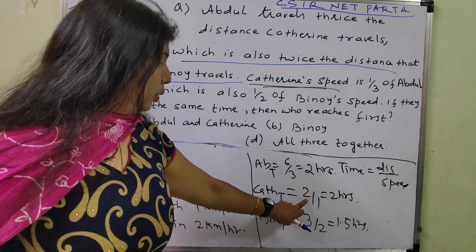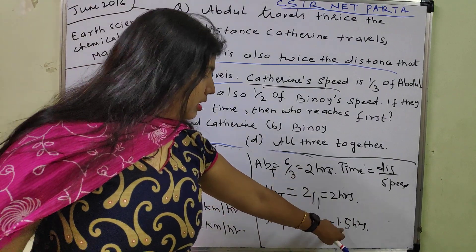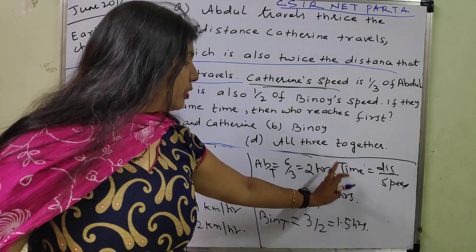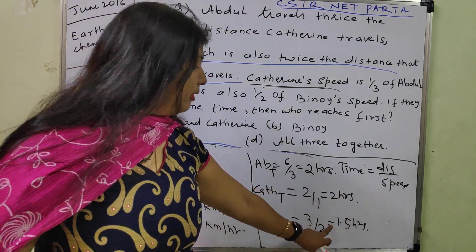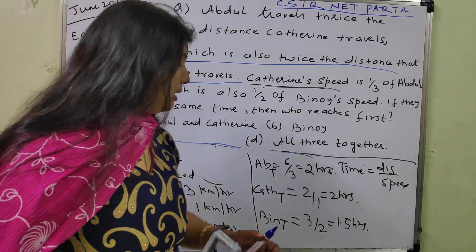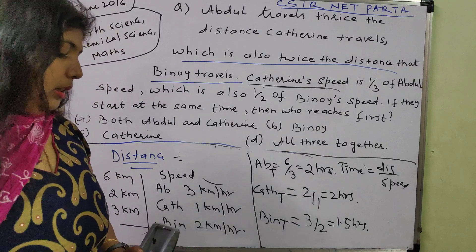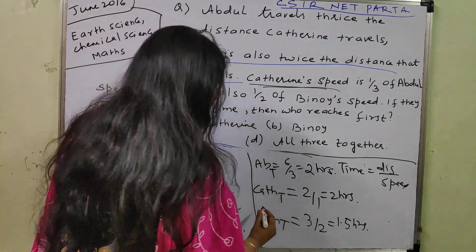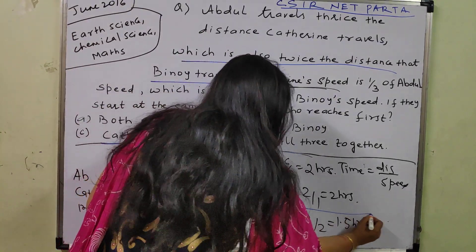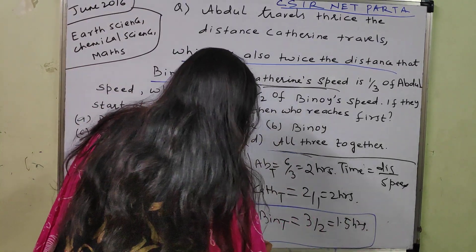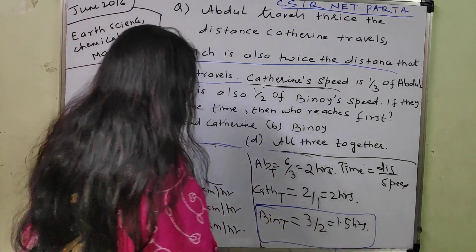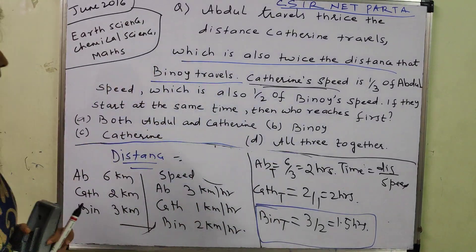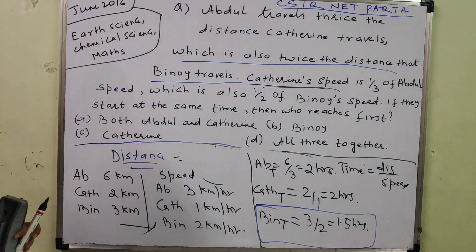Out of 2, 2 and 1.5, the minimum value is 1.5. So the minimum time taken is by Benoit. Therefore, Benoit will reach first.